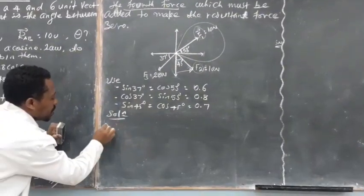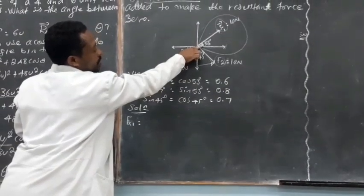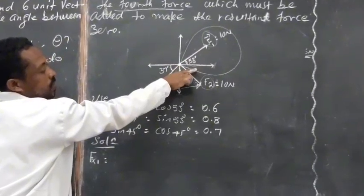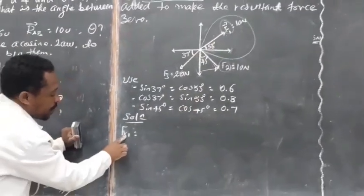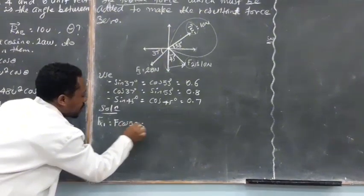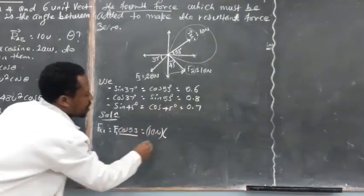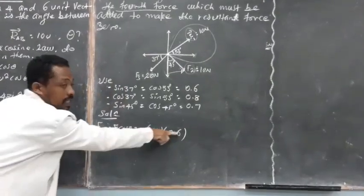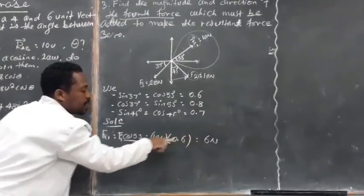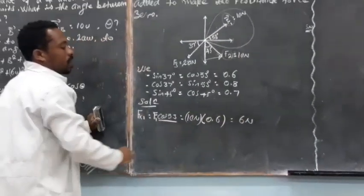Now first, F1x, or the x-component of F1: cosine 53 degrees equals F1x over F. So F1x equals F times cosine of 53 degrees. F1 is 10 newtons, cosine 53 degrees is 0.6. Multiplying gives 6 newtons. The x-component of vector 1 lies along the positive x-axis.